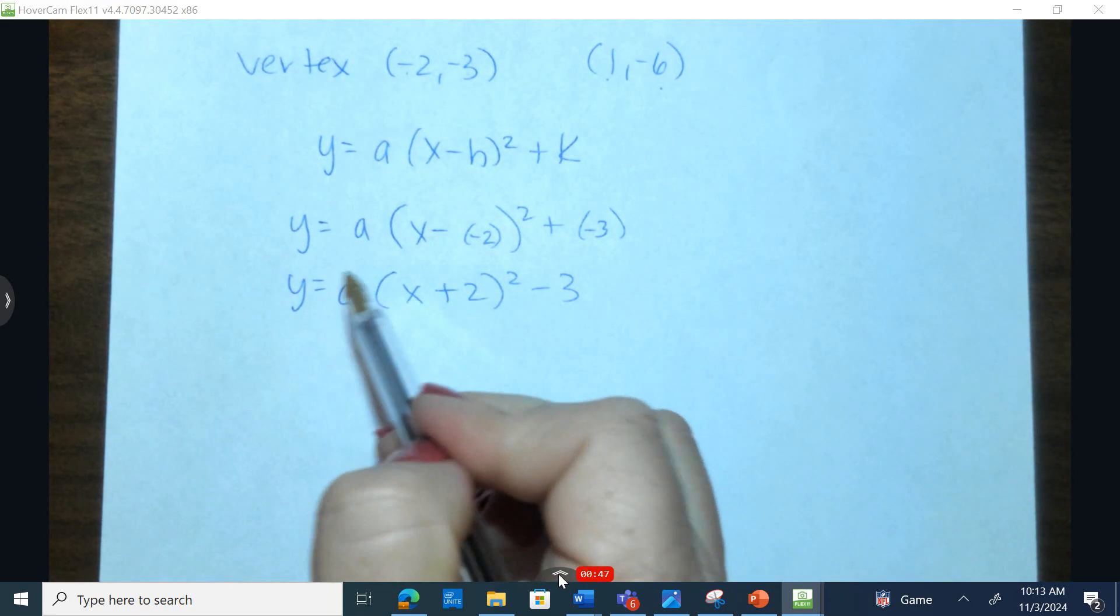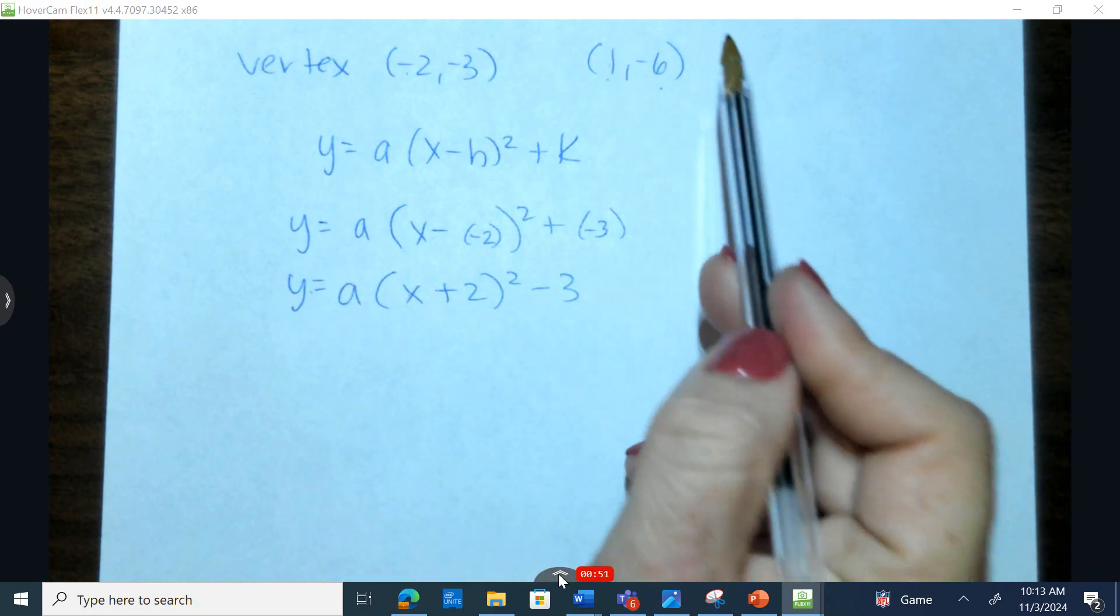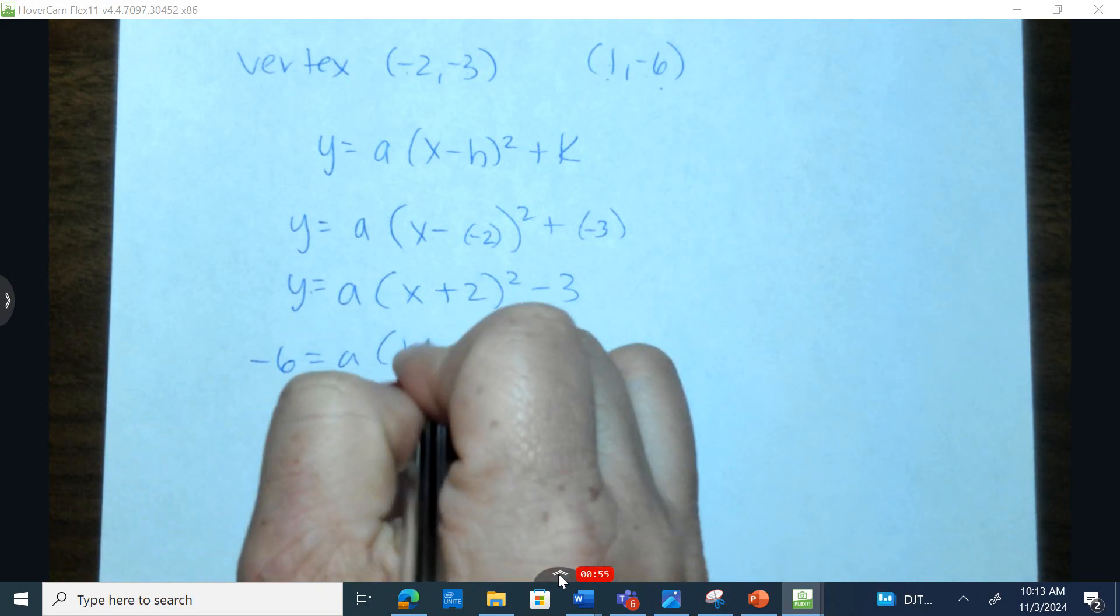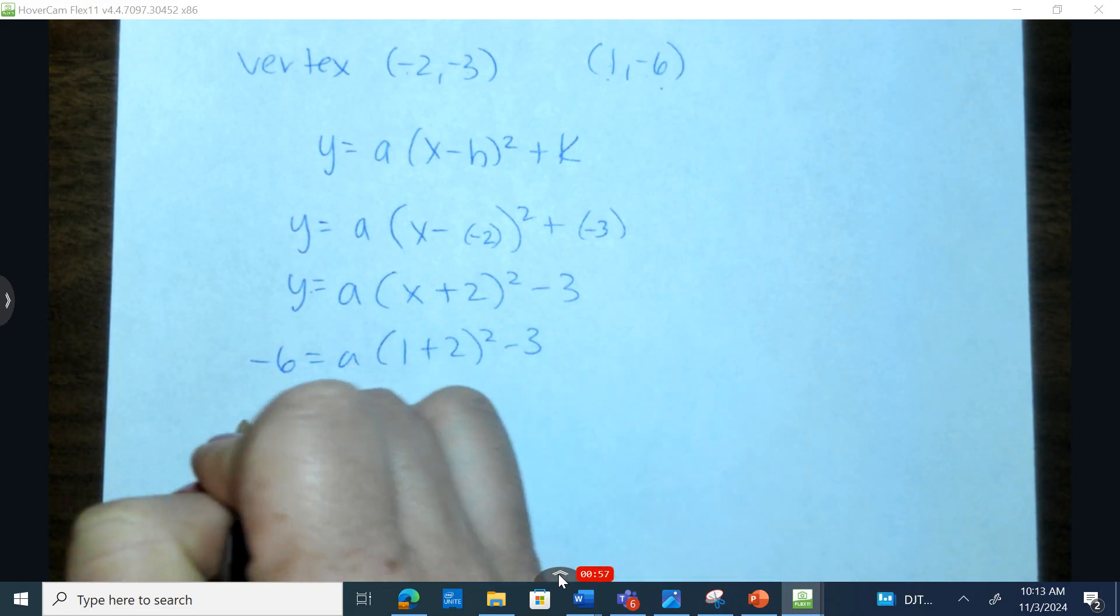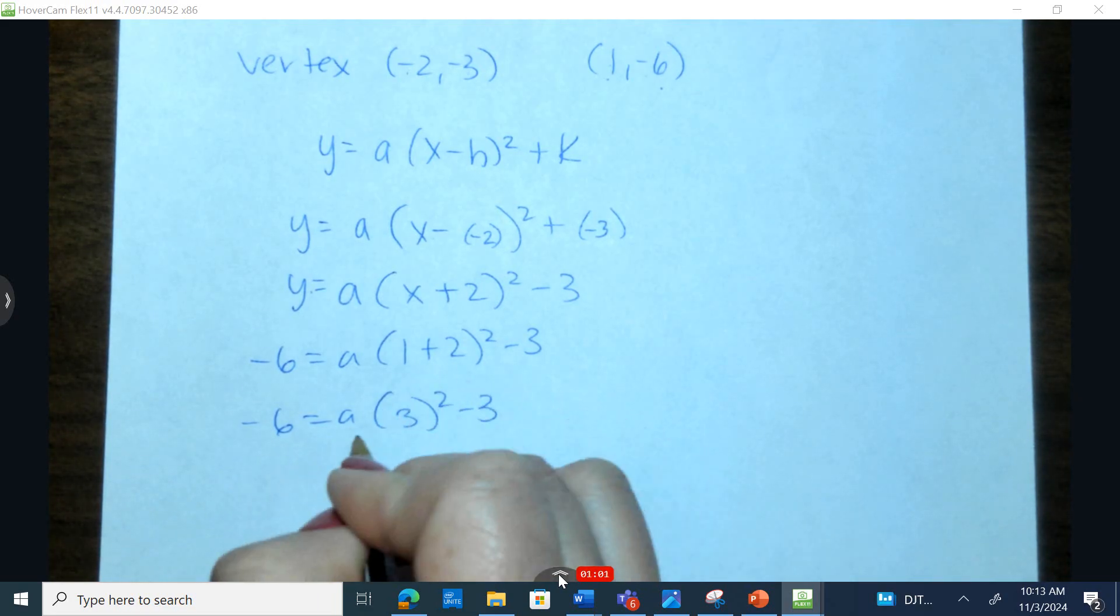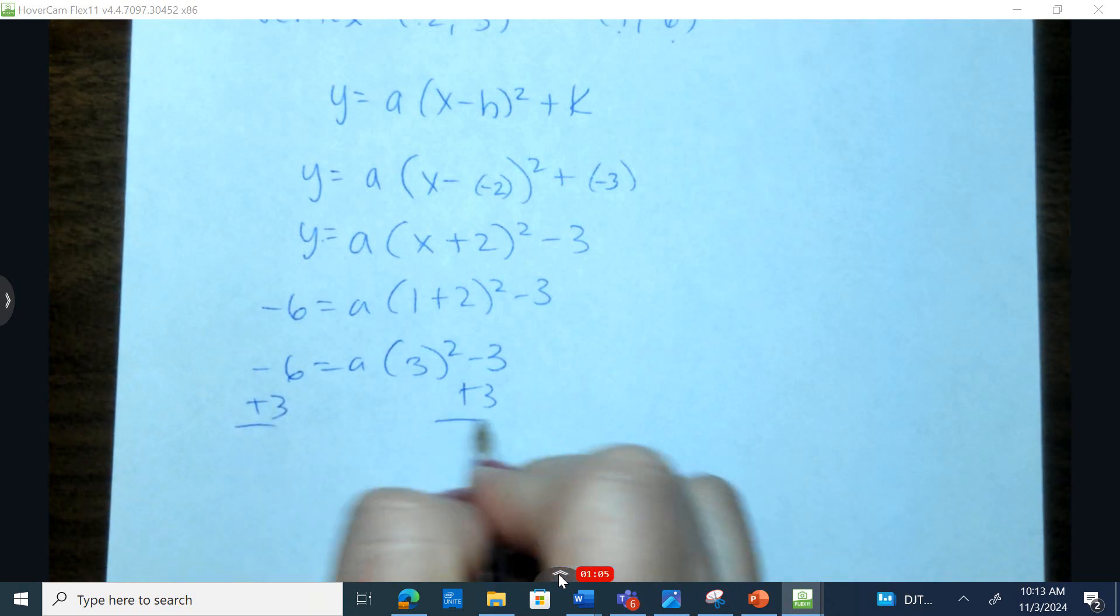In order to achieve the a, I'll take and replace x with 1 and y with negative 6. This is the random point that's on the parabola. 1 plus 2 is 3. And now I'm going to isolate the a. So start by doing the reverse operations. On the side that contains the variable, what can you remove by adding or subtracting?